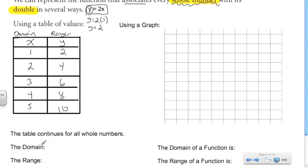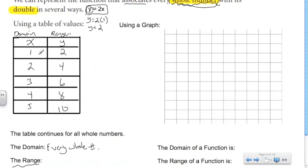They're asking us what the domain is and what the range is in full. We can tell them the domain because they've told us — it's every whole number that exists. What's the range then? If you take any whole number and multiply it by 2, you will always get an even number. So the range is going to be every even number. The domain can be represented by any whole number that exists, whereas the range is limited to every even number — it cannot be an odd number.